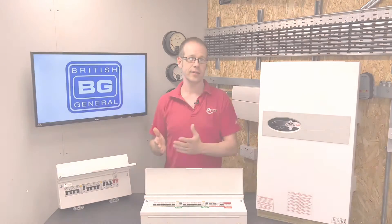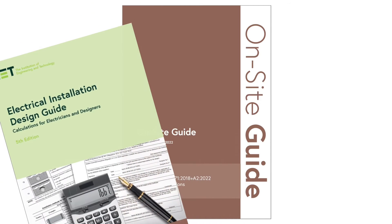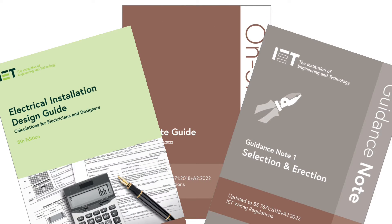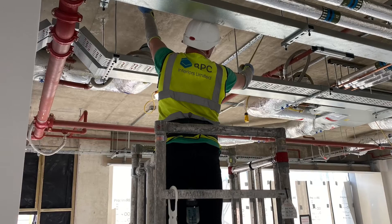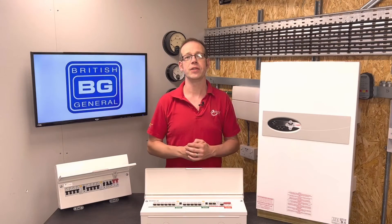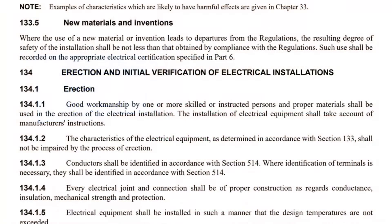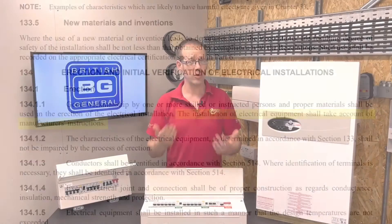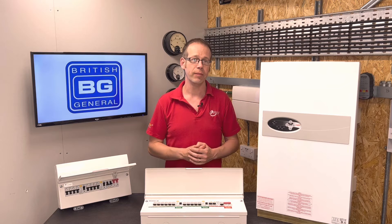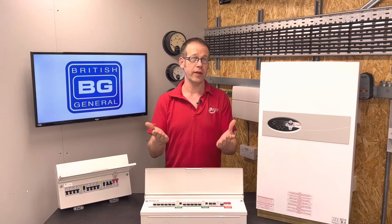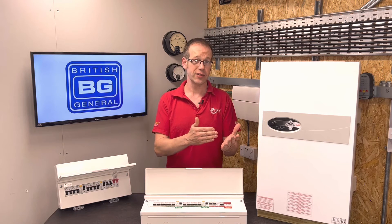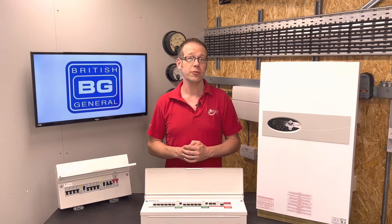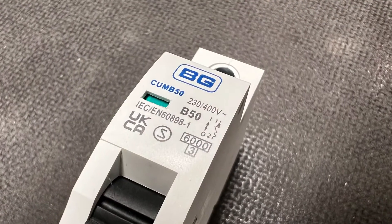We need to keep in mind that a lot of the IET publications have the word 'guide' or 'guidance' in the title — the On-Site Guide, Electrical Design Guide, Guidance Note 1 — and that's important. While the information in these books is valuable and working from it will help keep installations safe and compliant, there may be times when we go a bit beyond what they say. In fact, BS 7671 states in regulation 134.1.1 that the installation of electrical equipment shall take account of manufacturer's instructions. Having looked at the calculations using both the 40 amp and the 50 amp MCB, it actually makes no difference to the cable size, so we'll go with the manufacturer's recommendation: a 50 amp MCB.